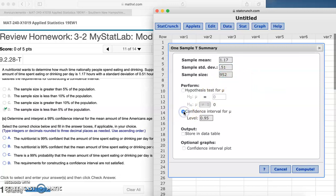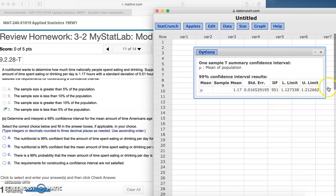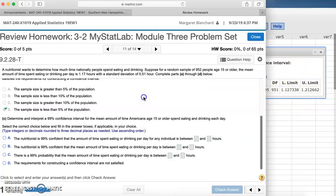Now we come down here, we make sure that confidence interval is checked. Here it automatically assumes that we're doing a 95, but we're actually doing a 99% confidence interval, so we need to change that to 99 and click Compute.